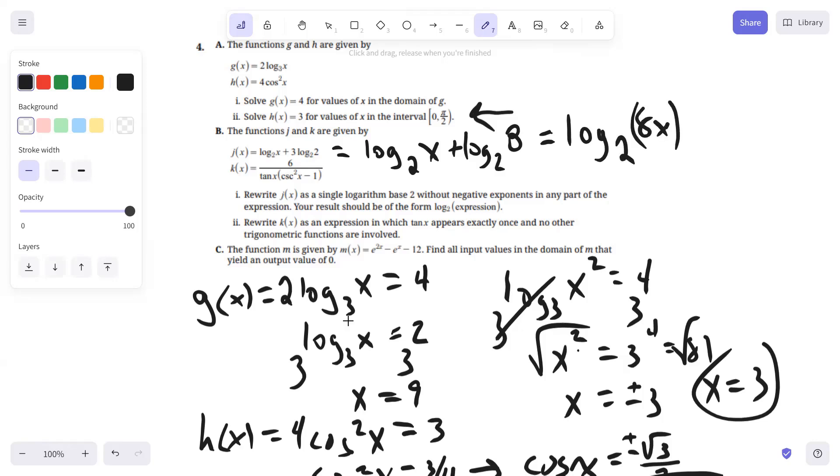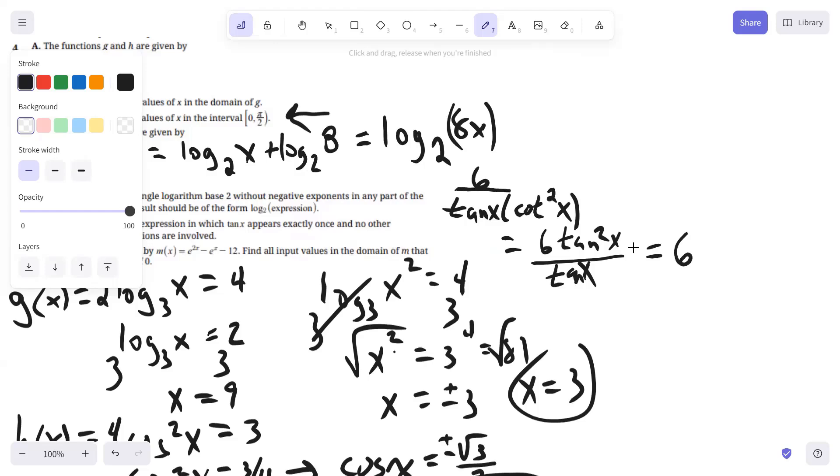Then the second one, rewrite K of X as an expression in which tangent appears exactly once and no other trig functions are involved. So if we look at this, cosecant squared X minus one is the Pythagorean identity for cotangent squared X. Then you could rewrite this as six tangent squared by the reciprocal identity of cotangent. And then a factor of tangent cancels and you have six tangent X.